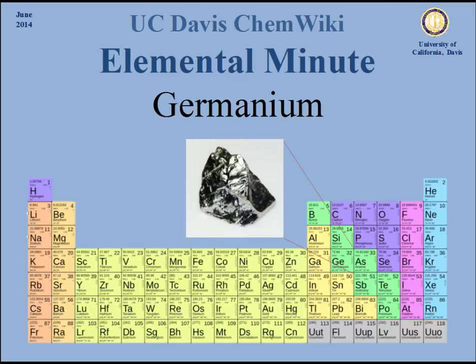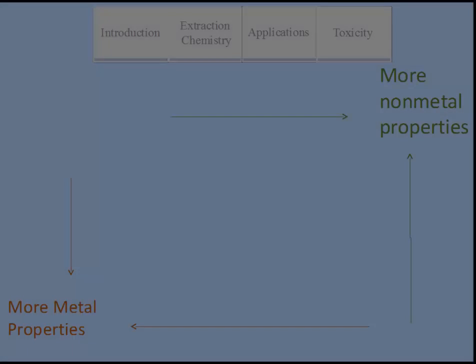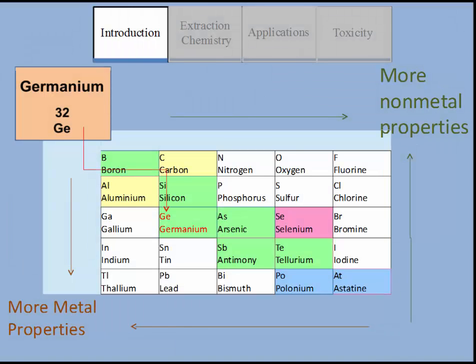Germanium is a gray-white solid metalloid found in group 14, the carbon family, that possesses similar characteristics with silicon. However, it is more reactive and thus commonly found forming oxides with oxygen rather than in its pure state. It is located in the metalloid staircase on the periodic table having both metal and non-metal properties.